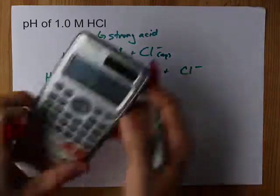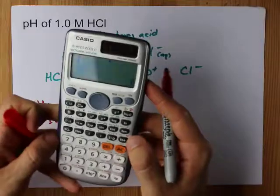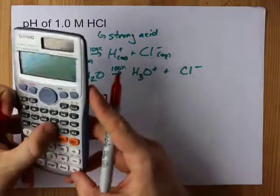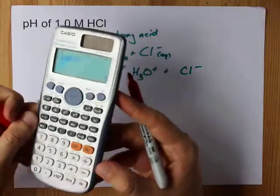Now, if you don't know how logs work, you can just type it in your calculator. I do, so I know what number I'm going to get. I'm going to get 0.